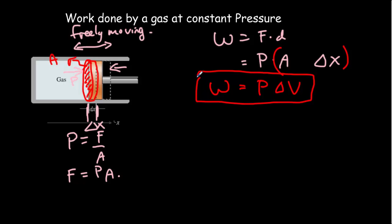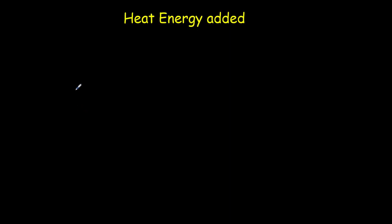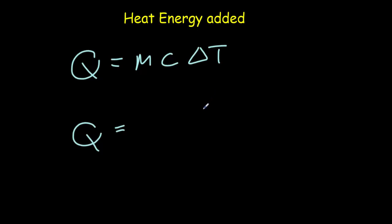This expression W = P ΔV is also useful when pressure is not constant, because we can then think in terms of an average pressure. As for heat energy, when we studied thermal physics we had two expressions: for solids, liquids, and gases you can determine heat added using specific heat capacity, and when you have a phase change you can use the latent heat of fusion or vaporization.